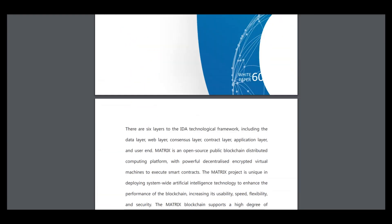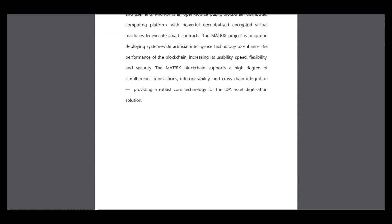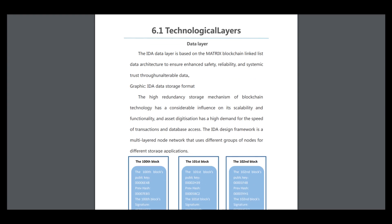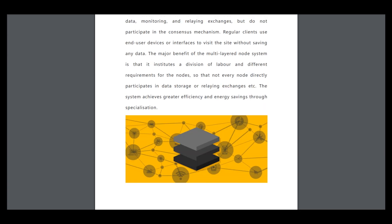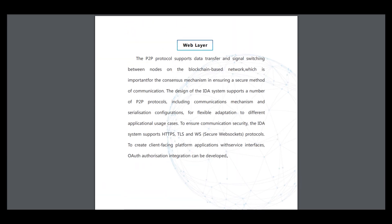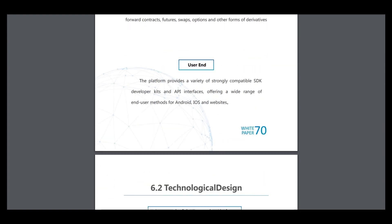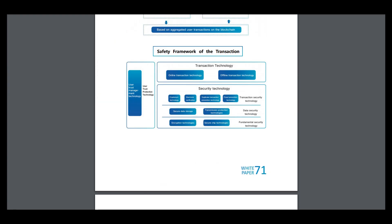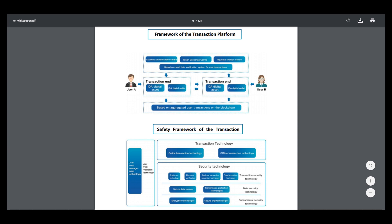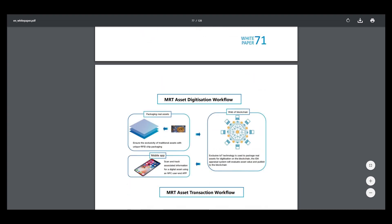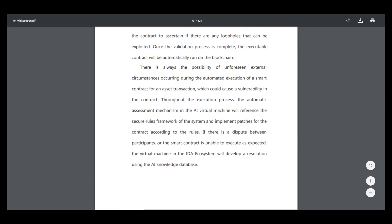The next part is underlying technology — how we use this project and what technology components are included. Here is information about the consensus layer, application layer, and technological design. Here are the relations between all companies regarding transactions, security technologies, transaction technology, workflow, and smart contracts.